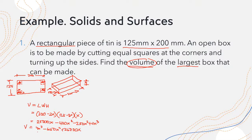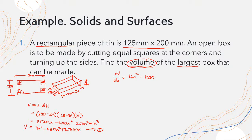We only have one variable in our equation, which is x, so we can differentiate. The derivative of V with respect to x is dV/dx = 12x² − 1,300x + 25,000.